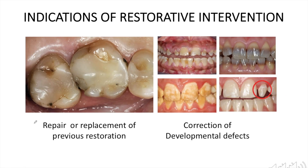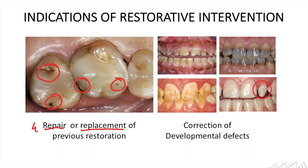Another indication of restorative treatment is repair or replacement of previous restoration. Existing restorations may fail due to various reasons like fracture or secondary caries. For example, in this case you can see caries and fracture of a previously existing composite restoration. We need to carry out tooth preparation to repair or replace such restorations for the longevity of the teeth.